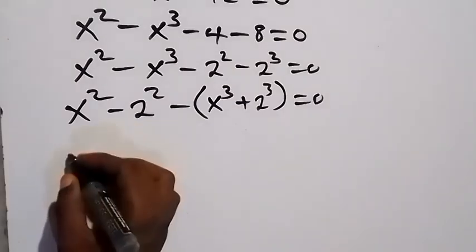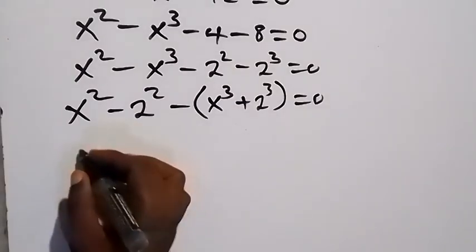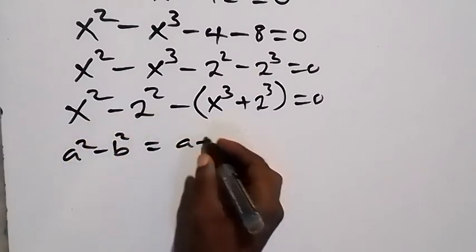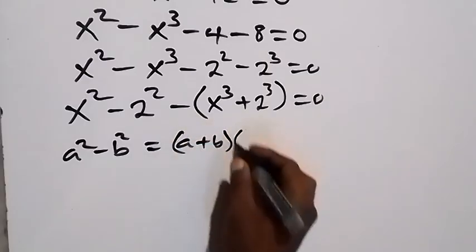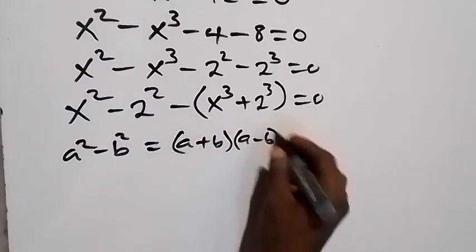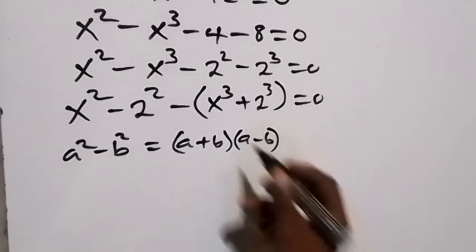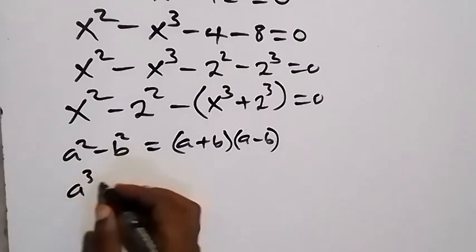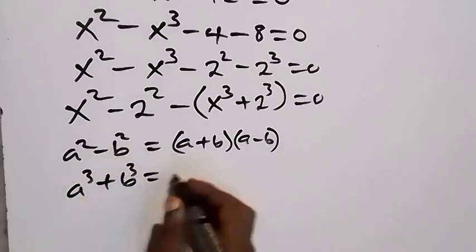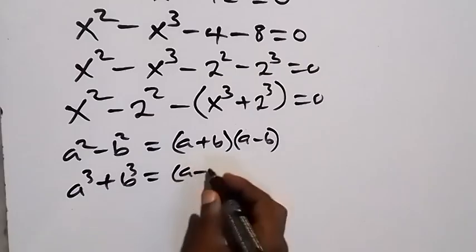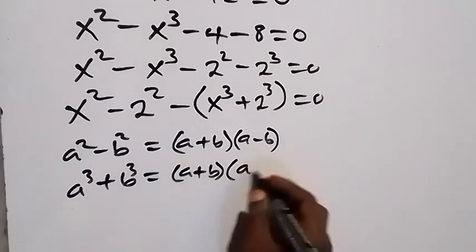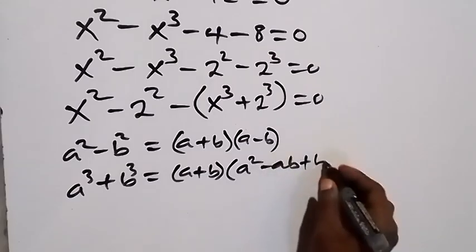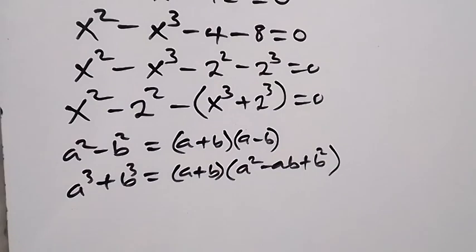From here we can use two identities. The first is difference of two squares: a squared minus b squared equals (a + b)(a − b). Similarly, for the second part we use sum of two cubes: a cubed plus b cubed equals (a + b)(a squared minus ab plus b squared).